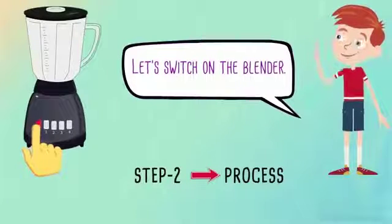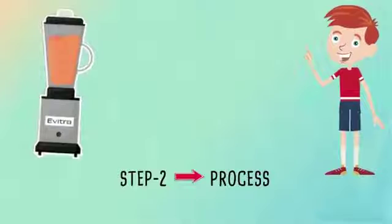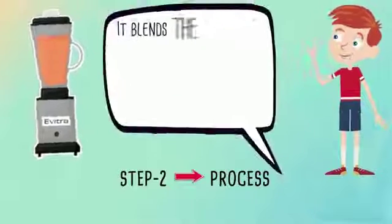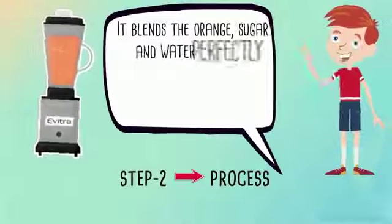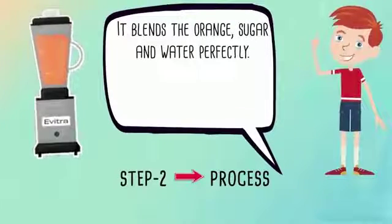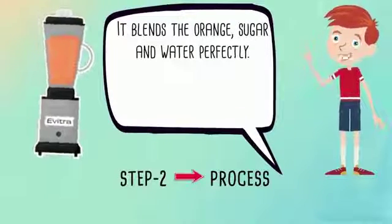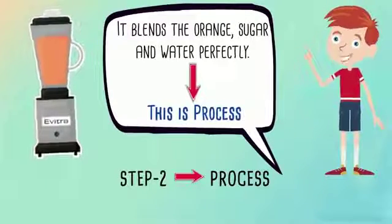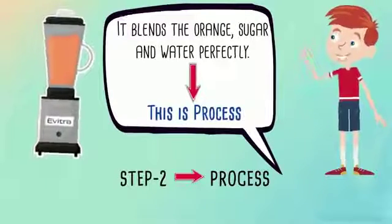Step 2 is the process. Let's switch on the blender. It blends the orange, sugar and water perfectly. This is the process.